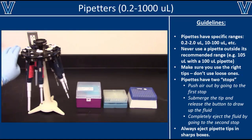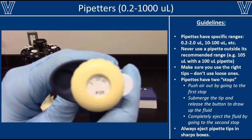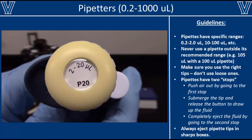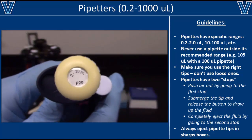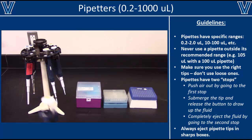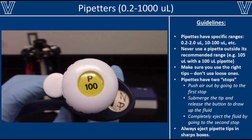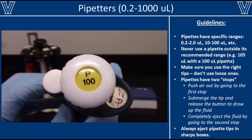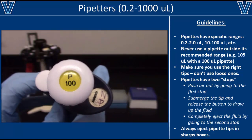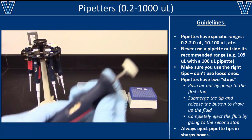Pipettes come in a range of sizes and can accurately transport volumes as small as 0.2 or as large as 1,000 microliters. The volume range of each pipette is shown on top of its plunger. For example, this P20 pipette can transfer 2 to 20 microliters. Sometimes only the maximum volume is shown on the plunger, but the volume range of all pipettes is tenfold, so this pipette transfers 10 to 100 microliters.